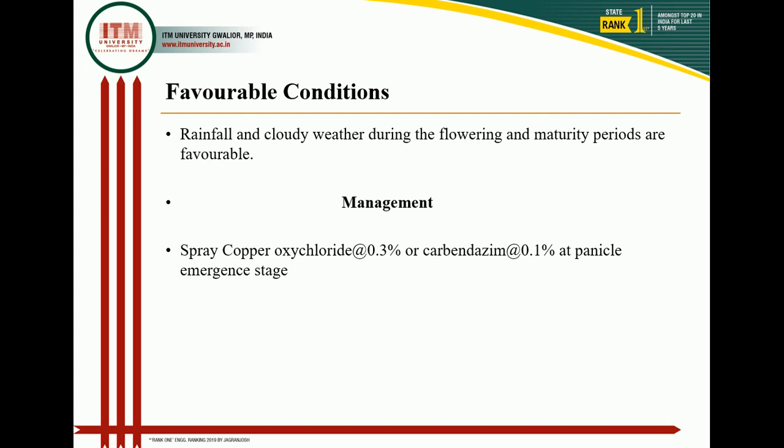Management of rice false smut: use disease-free seed for planting material and give seed treatment with copper oxychloride. If we do summer deep plowing, chlamydospores are killed due to high heat and sun rays. Spray copper oxychloride at three percent or at 0.1 percent at panicle emergence to manage the disease.